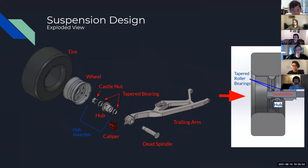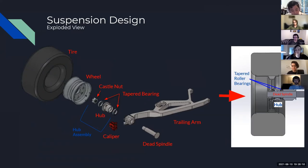Going into the wheel assembly design — here is the exploded view showing all components: our tire, wheel, hub assembly, trailing arm, caliper mounted to the trailing arm to facilitate braking with the rotor on the hub, and our dead spindle which holds everything together. A cutoff view shows the tapered rolling bearings inserted into the hub and how they interact with the dead spindle.